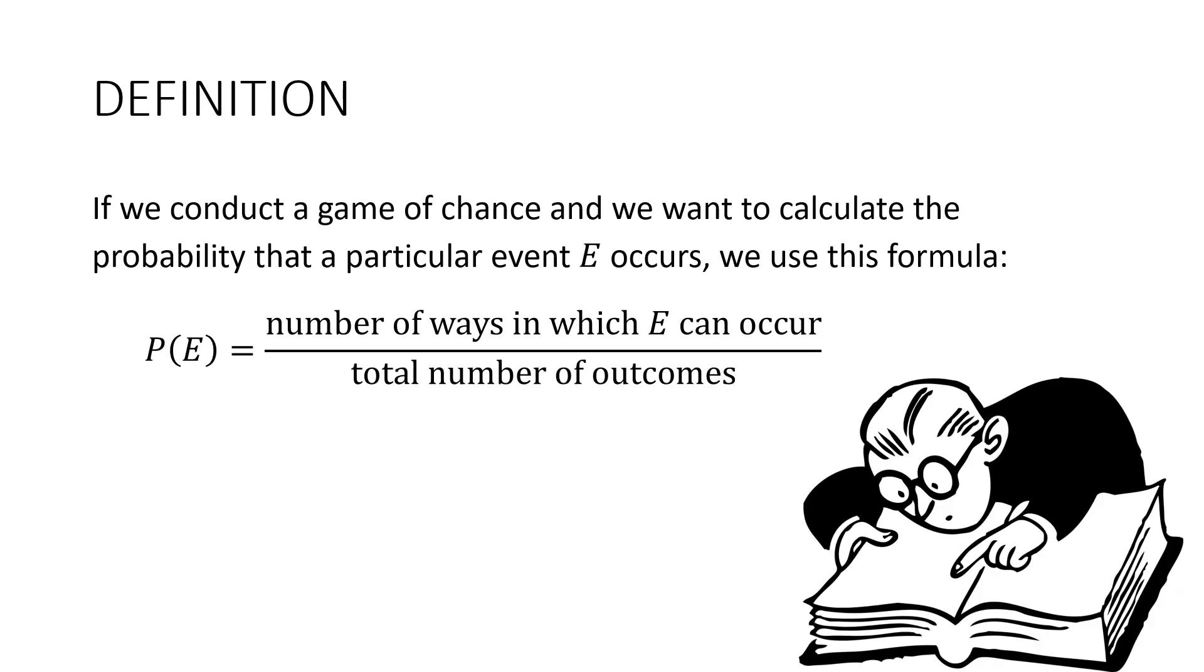So here's the formula for probability. If we conduct a game of chance and we want to calculate the probability that a particular event E occurs, then we would write it like this. This means the probability that E occurs and it's going to be equal to the number of ways in which E can occur divided by the total number of outcomes.